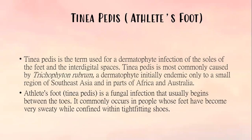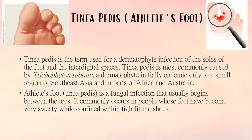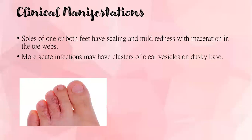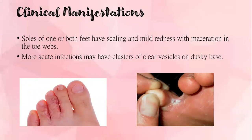The next type of tinea is tinea pedis, also known as athlete's foot. Tinea pedis is the term used for a dermatophyte infection of the soles of the feet and interdigital spaces. It is most commonly caused by trichophyton rubrum, a dermatophyte initially endemic only to a small region of Southeast Asia and parts of Africa and Australia. It commonly occurs in people whose feet have become very sweaty while confined within tight fitting shoes. Clinical manifestations include scaling and mild redness with maceration in the toe webs, and more acute infections may have clusters of clear vesicles.